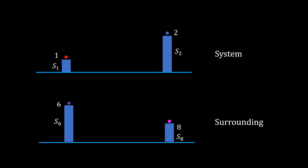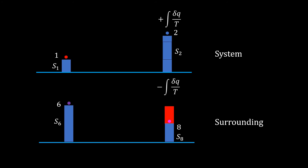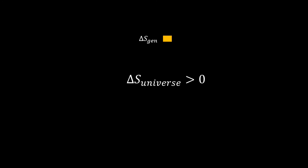Visually, the system and surrounding are in some initial states 1 and 6 with entropy s1 and s6 respectively. When the system irreversibly moves to state 2, the surrounding moves to another state 8 in a reversible manner. In the system, the integration of Q divided by T is not equal to the actual entropy difference between the final and initial states; in the surrounding, these are equal. When the total entropy change of the system plus surrounding is calculated, it results in a net entropy change of the universe. Only a part of entropy from the surrounding to the system is transferred; the remaining increase in entropy of the system is generated entropy. So the change in entropy of the universe is positive.